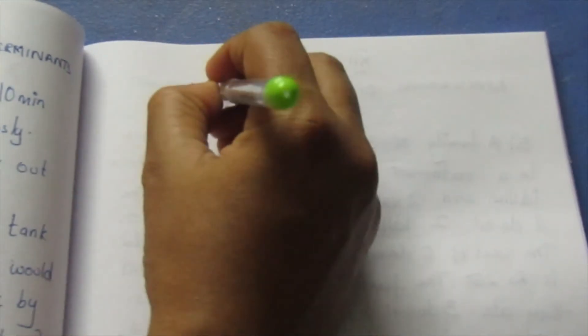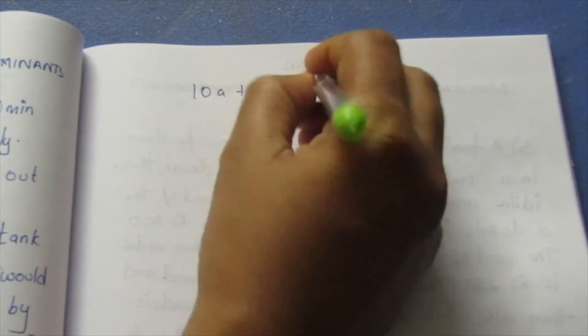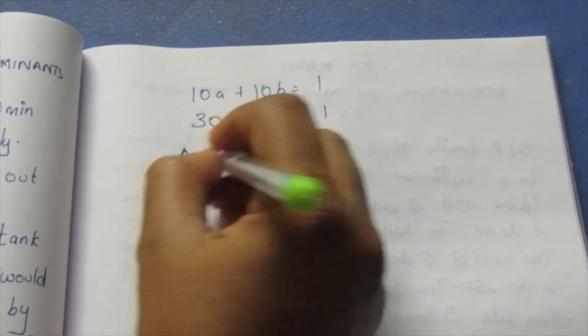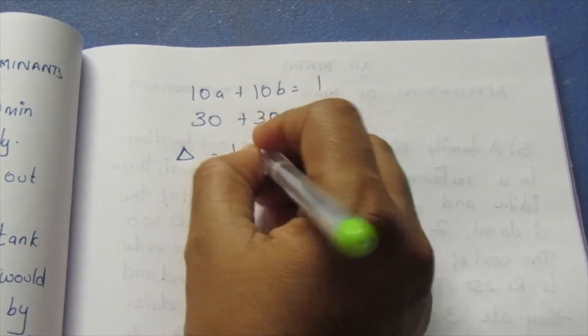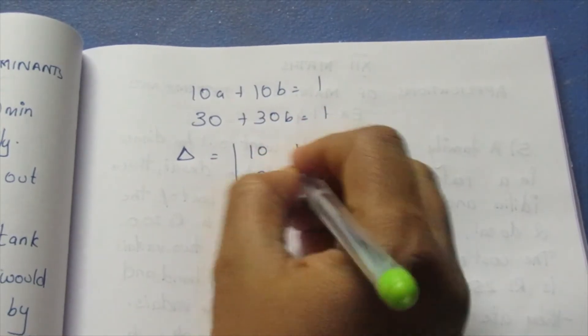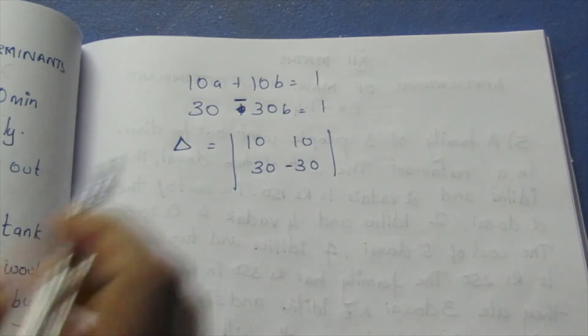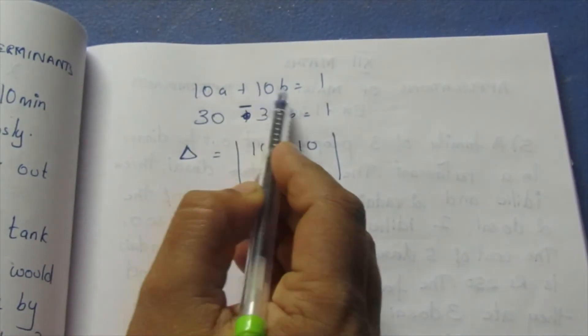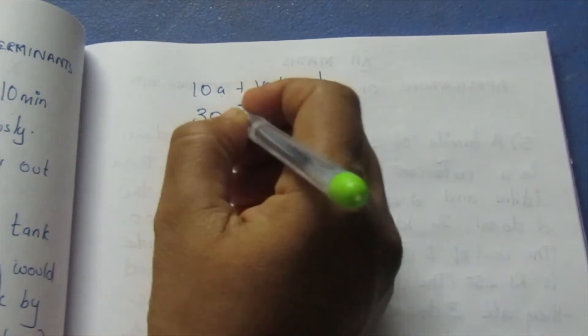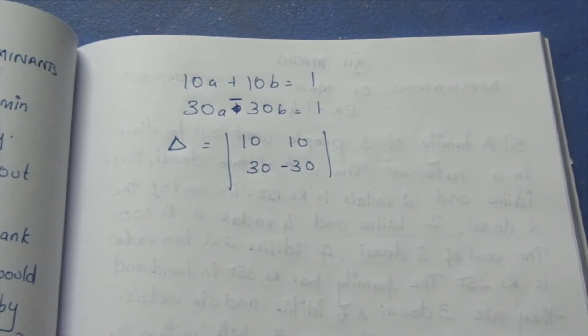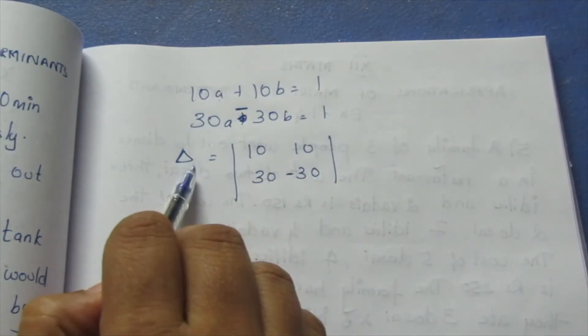I will solve this equation. 10a plus 10b equal to 1, and 30a minus 30b equal to 1. If you look at the determinant, the coefficients are 10, 10, 30, minus 30. So we cross multiply to form the determinant.